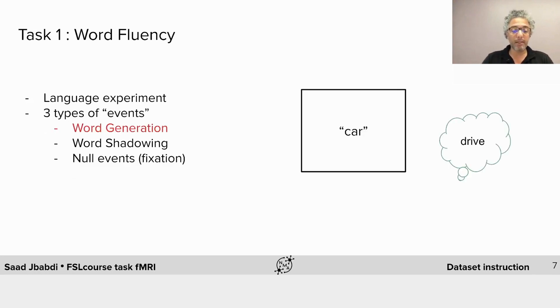The first type is called word generation. Here the subject is shown a noun on the screen. They must then think of an associated verb and say that verb in their head without vocalizing.